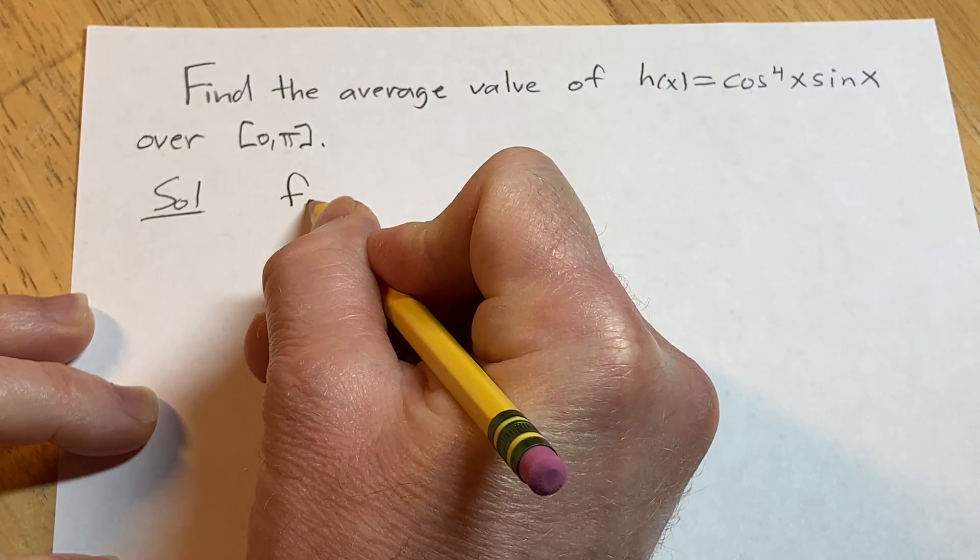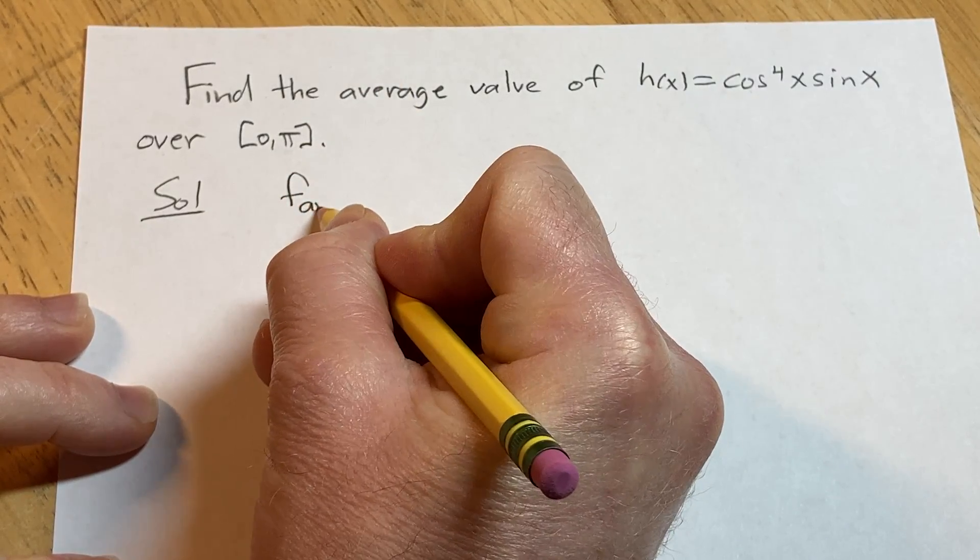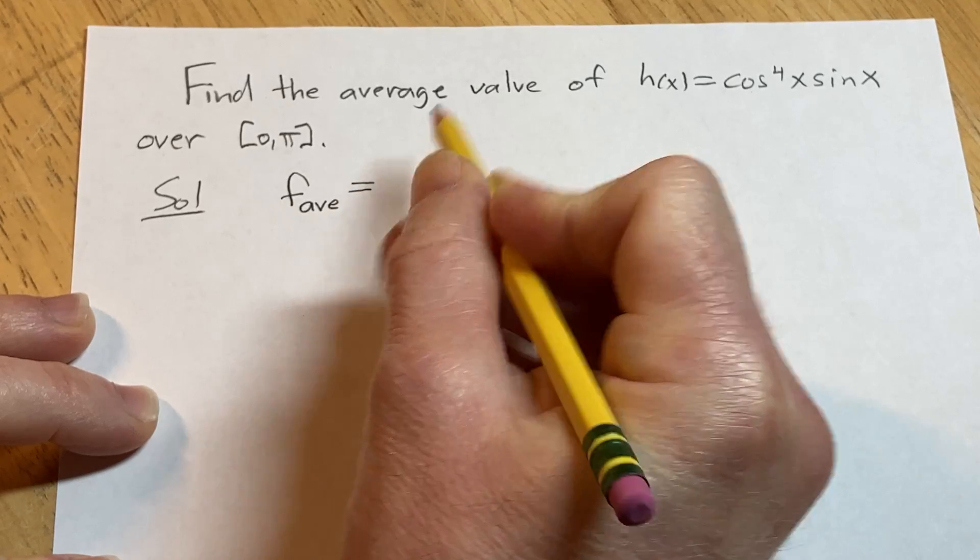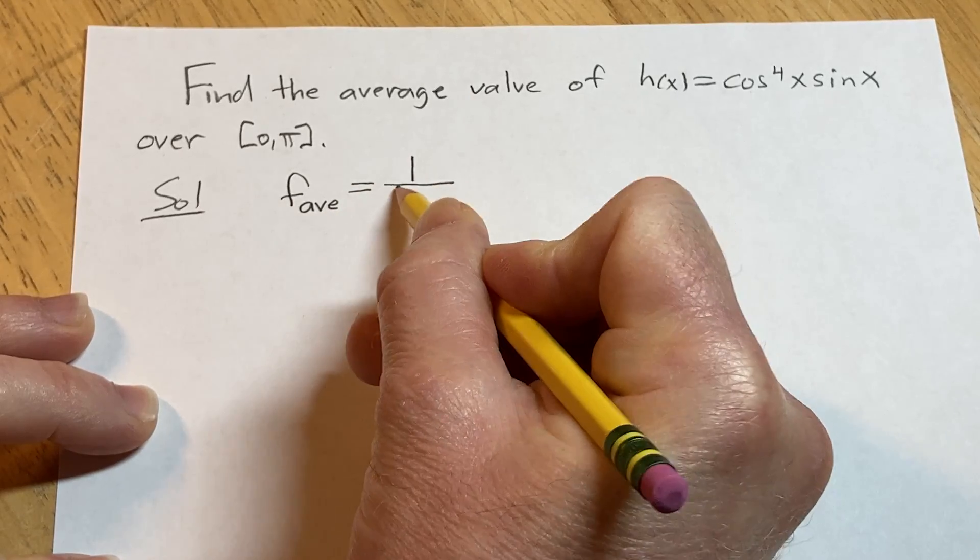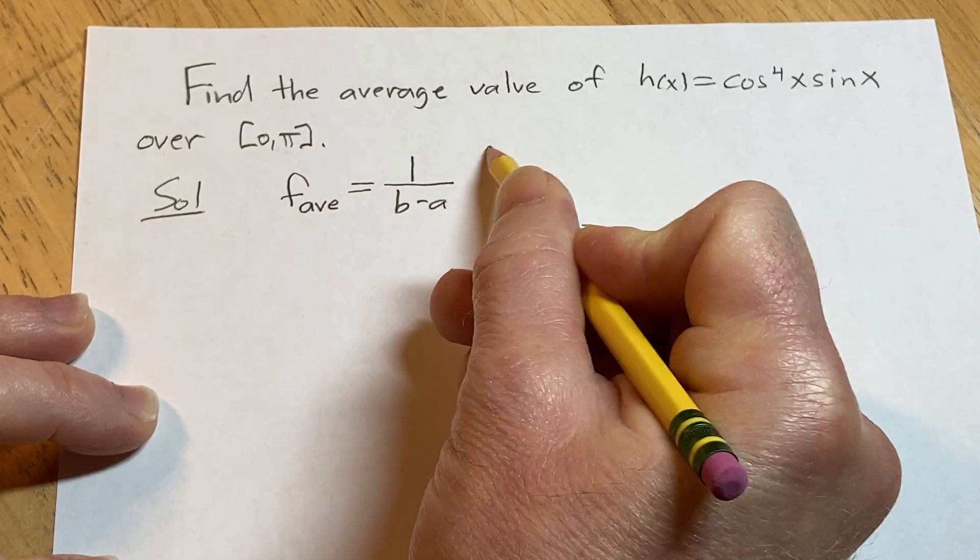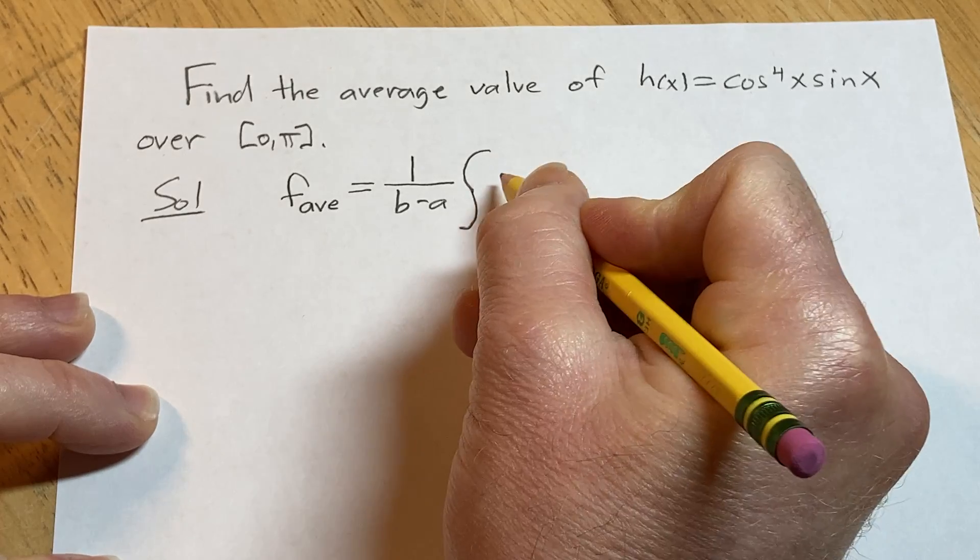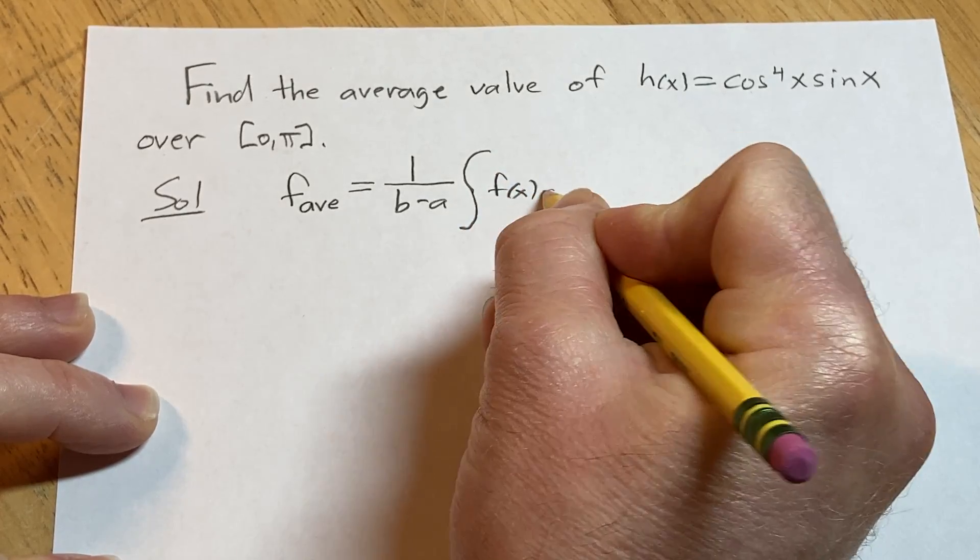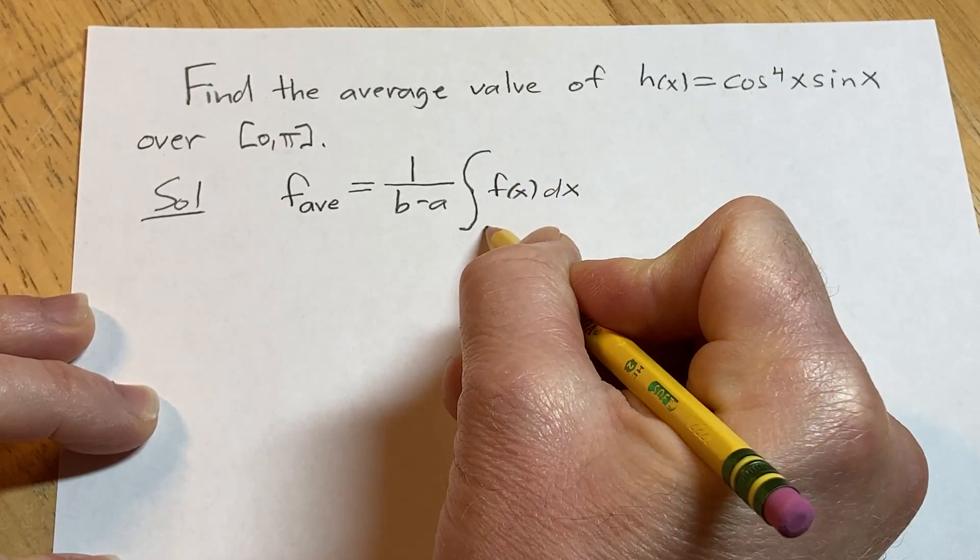We'll start by writing down the formula for the average value of a function over an interval. So f sub ave is equal to 1 over b minus a times the definite integral of f of x dx from a to b.